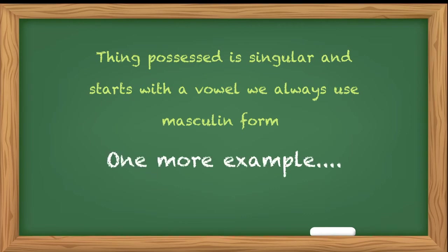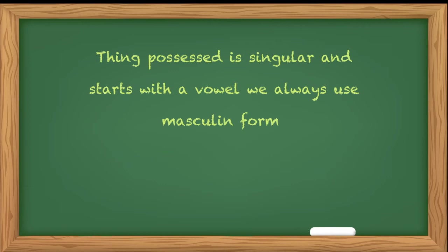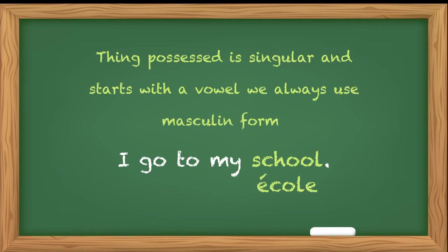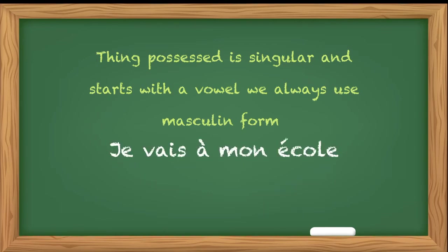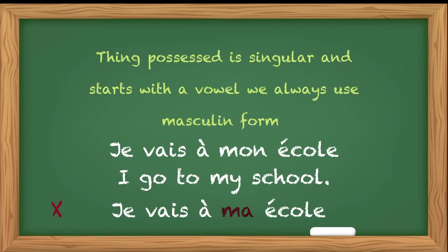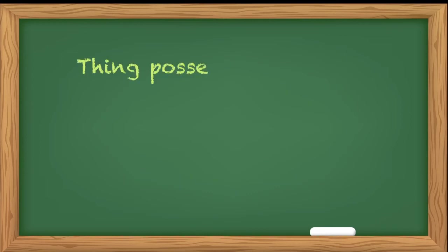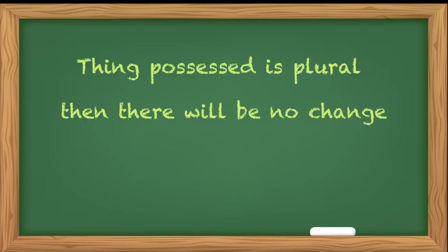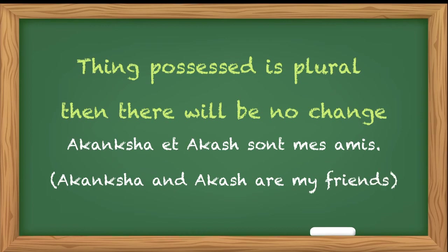Another example: 'I go to my school.' School in French is école, which starts with a vowel and is feminine singular. So the sentence will be 'Je vais à mon école' — not ma école, but mon école. But if the thing possessed is plural, then there will be no changes. For example: 'Akanksha et Akash sont mes amis.' There are no changes in the plural form. This was table number one.